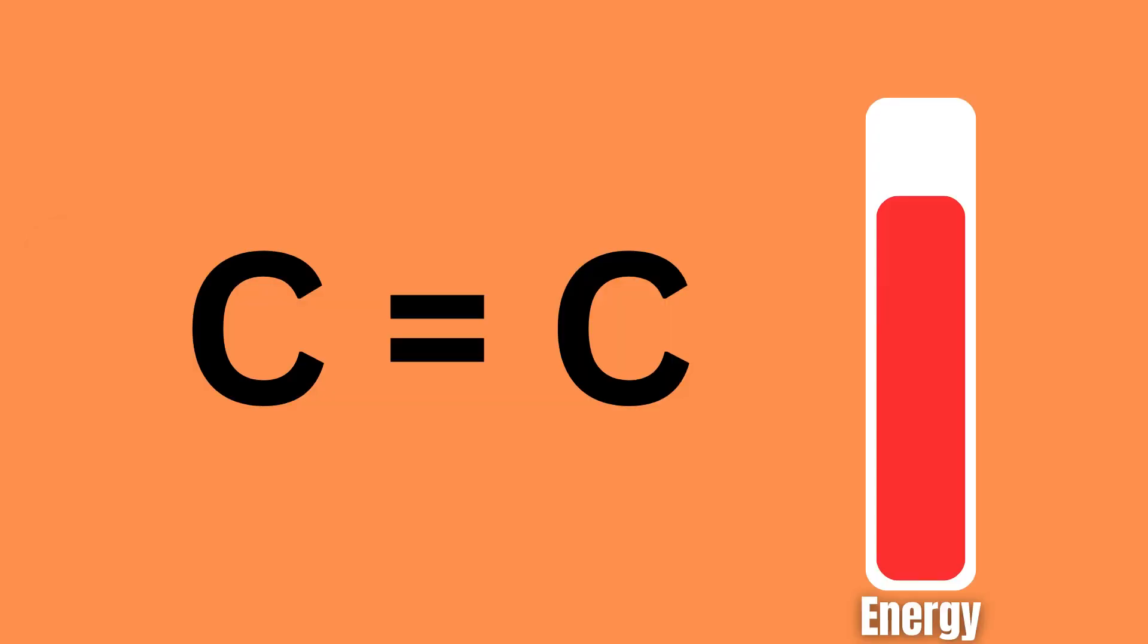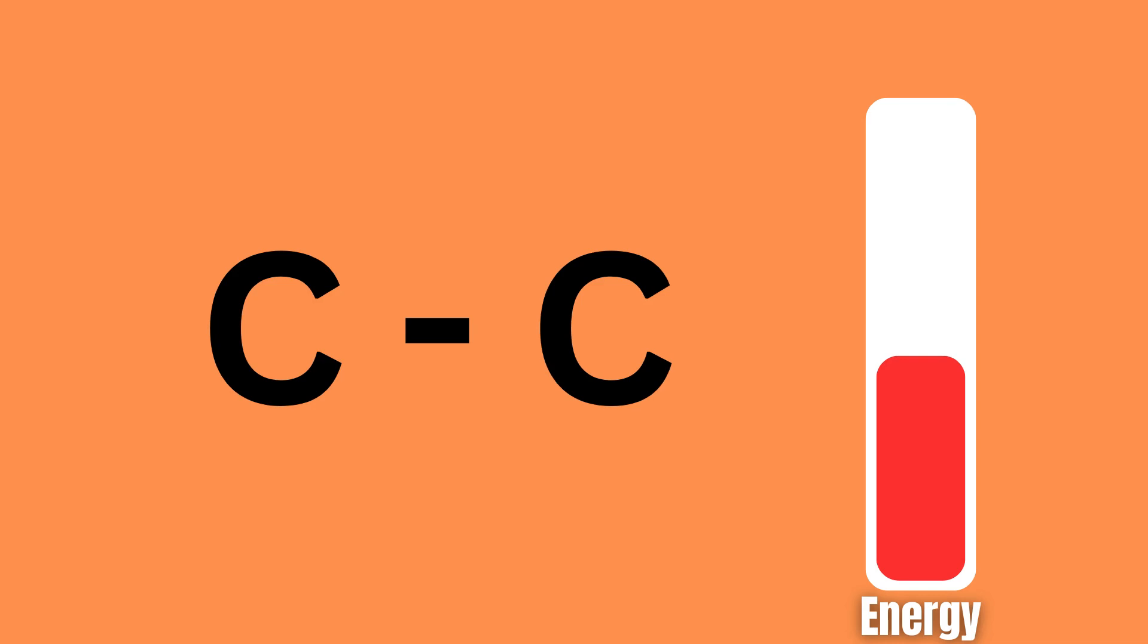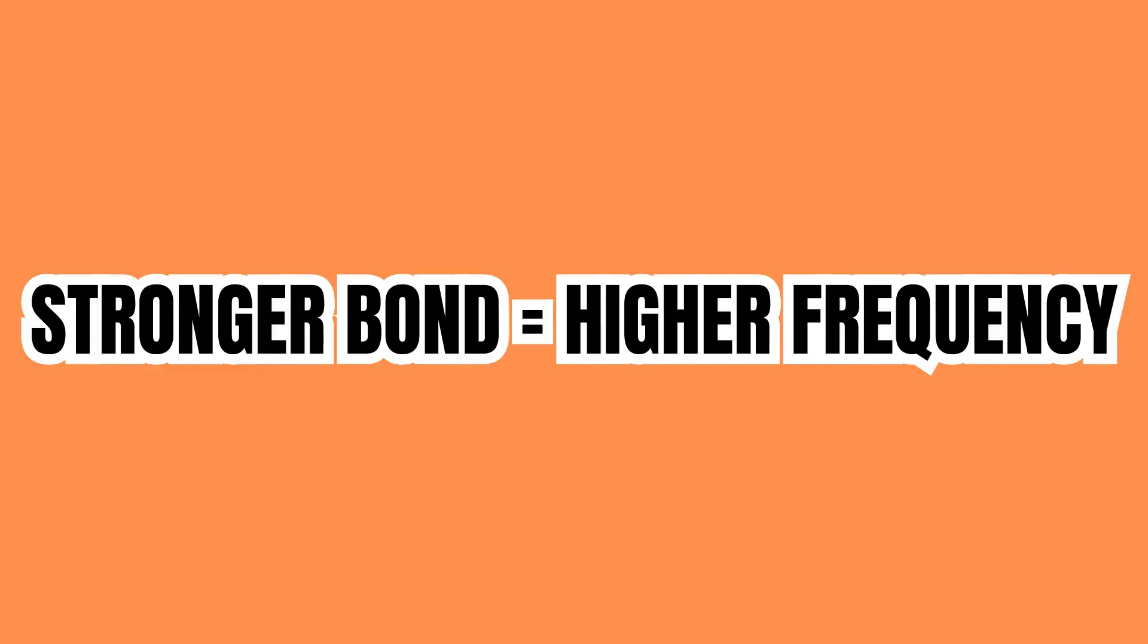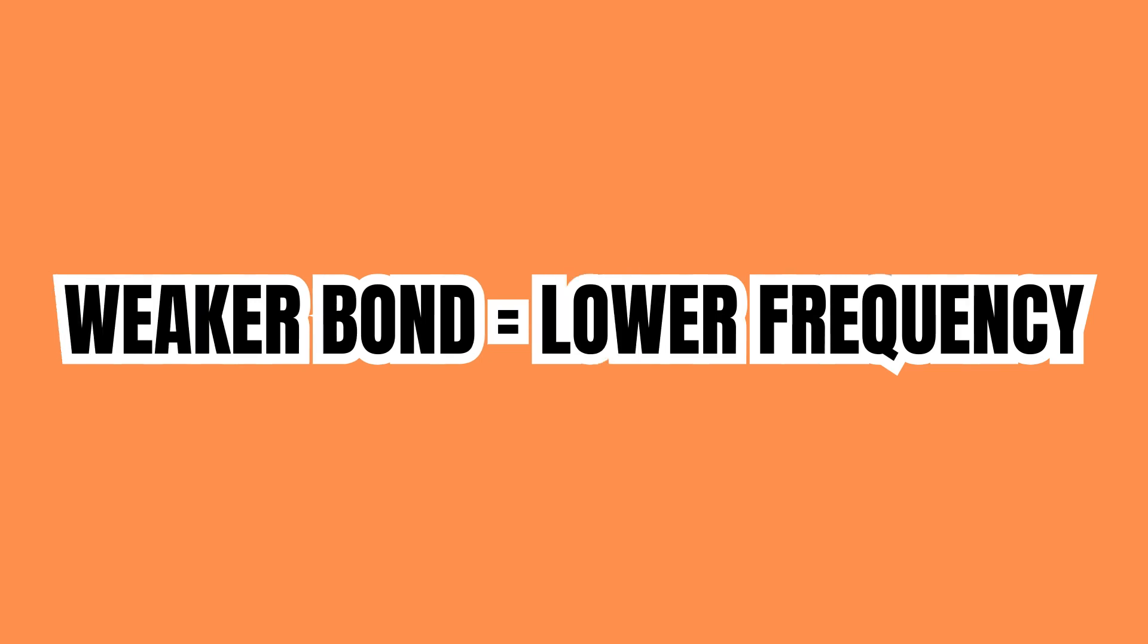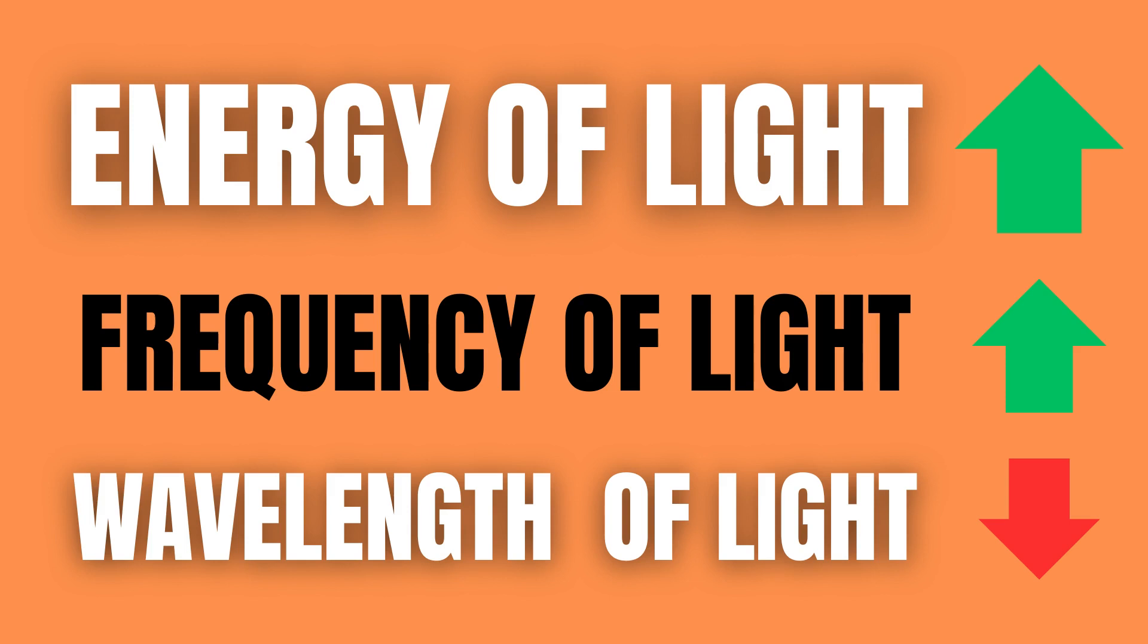Stronger bonds absorb more energy than weaker bonds. In other words, stronger chemical bonds will absorb the light of a higher frequency and lower wavelength compared to weaker bonds. This happens because the energy of light is directly proportional to its frequency and inversely proportional to its wavelength.